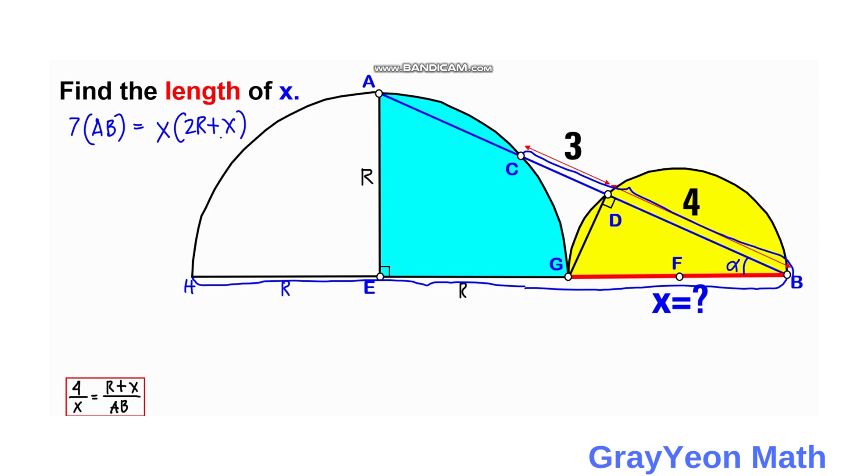If we try to simplify, let's manipulate this. Cross-multiplying 7 over X, AB will be on the denominator of the left-hand side. This remains 2R plus X. So this will be our next equation: 7 over X is equal to 2R plus X over AB.